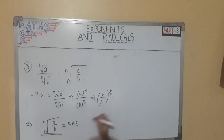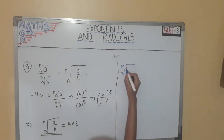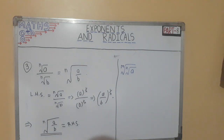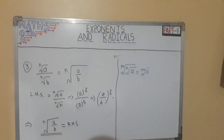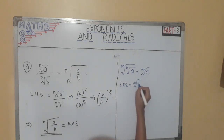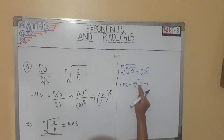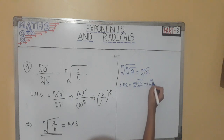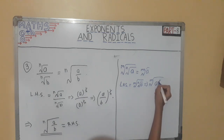Now the fourth example: m root of n root of a. We will take the LHS, that is m root of n root of a. First we will take m root as it is. Now we can write n root of a as a raised to 1 by n.